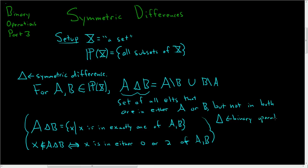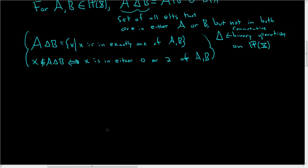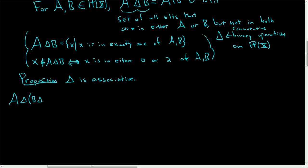It is a commutative binary operation on the power set. In this video, we're going to focus on the proof of associativity. So let's carefully do that. Proposition: the claim here is that the symmetric difference is associative. We're going to prove that it is an associative binary operation on the power set of capital X. We'll start by looking at A and take the symmetric difference of that with B△C.